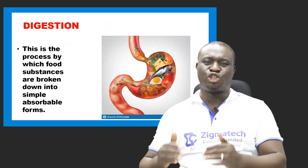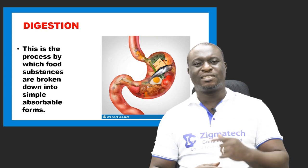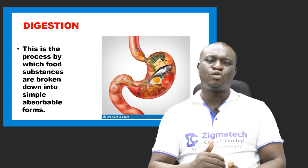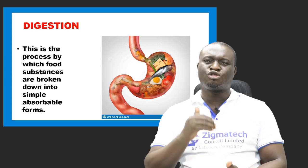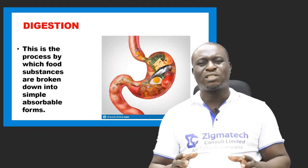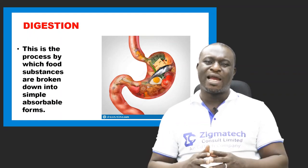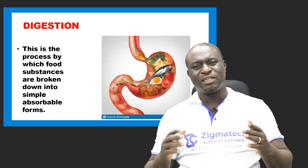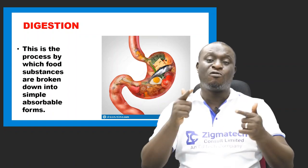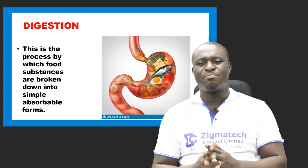Next is digestion. Digestion can simply be defined as the process by which food substances are broken down into simple absorbable forms. Food is broken down, most times through the involvement of enzymes, so it is the process by which food substances are broken down by a series of reactions involving enzymes into simple absorbable forms.